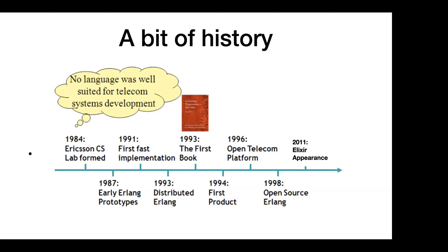They went with a declarative style from the start. The first real implementation was in 1991, then they made various improvements, and at the end of 1998 they moved to open source with the Erlang OTP platform. Erlang is a totally open source programming language with a large contributing community, and Ericsson still supports it, doing a lot for improvements in next releases.